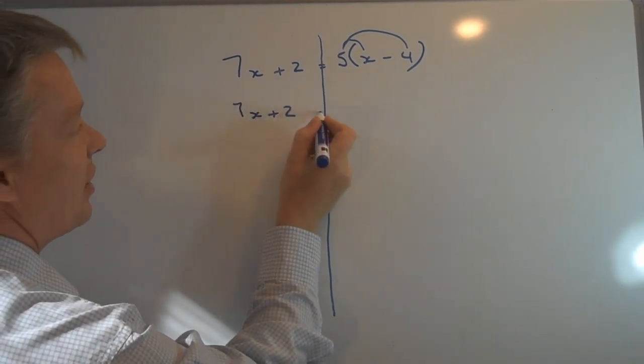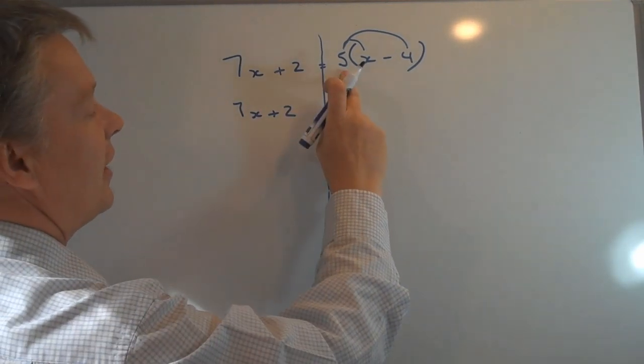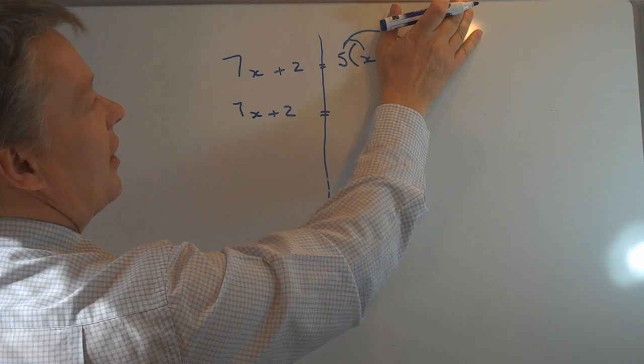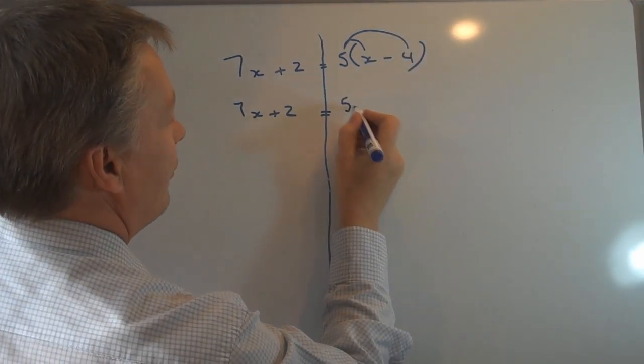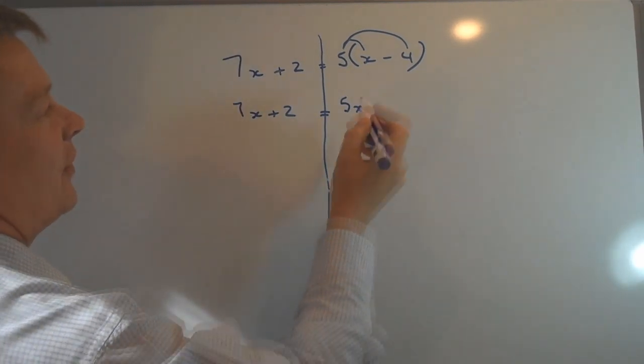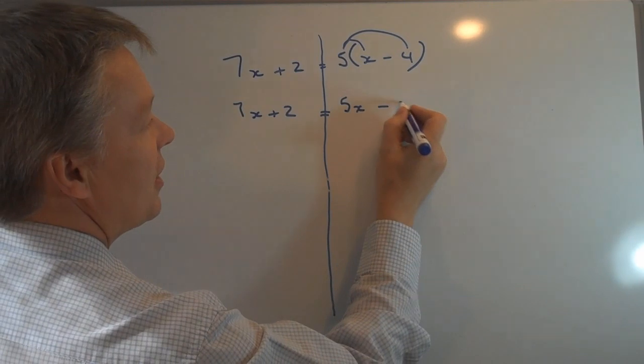This side hasn't changed so this still is going to remain as 7X plus 2, equals sign in the middle again, and this side the first term is going to be 5X. The next term is 5 times minus 4 which is minus 20.